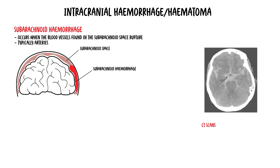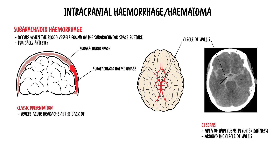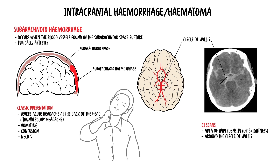On a CT image, a subarachnoid hemorrhage appears as an area of hyperdensity or brightness, typically found around the circle of Willis where ruptures of berry aneurysms can occur. The classic presentation is a severe acute headache at the back of the head — these are called thunderclap headaches. Other signs and symptoms include vomiting, confusion, neck stiffness, and reduced consciousness.